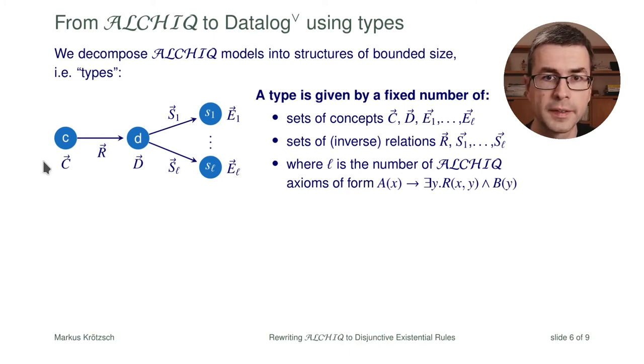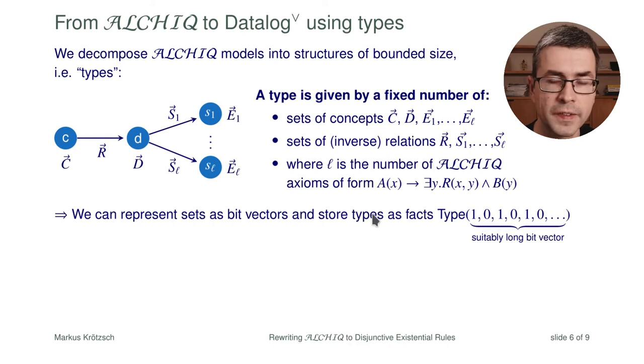To do this we use a technique that has been proposed before by Magdalena Ortiz, Sebastian Rudolph and Mantas Simkus, which consists in representing such sets as bit vectors. The idea is that we just take some order of the potential elements of all of these sets and then we store a bit vector of zeros and ones that encodes the presence or absence of an element in any of these sets. Once we have settled on this encoding we can have facts of this form: type of some bit vector to describe one such type.